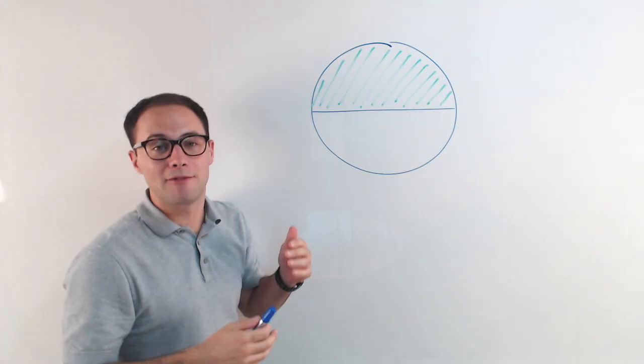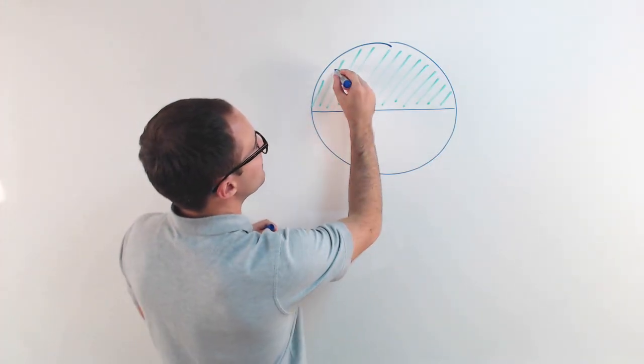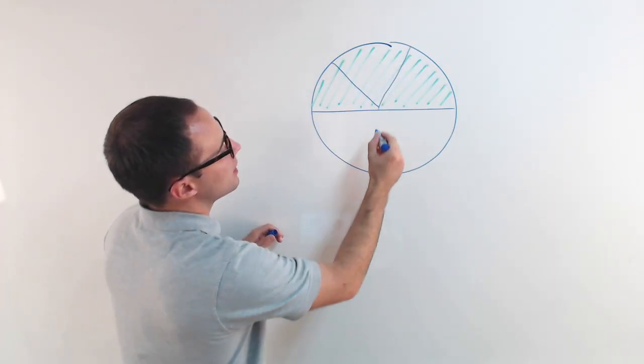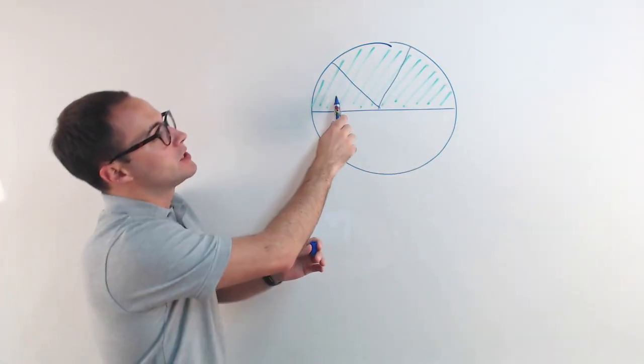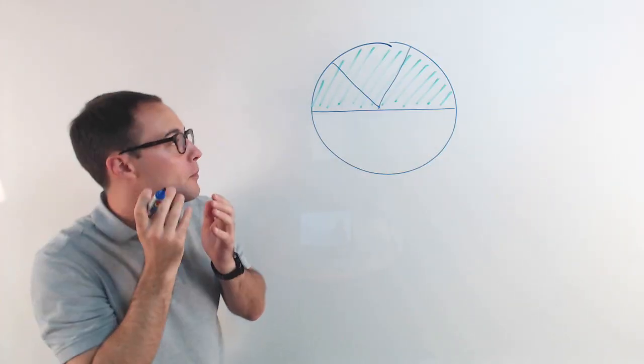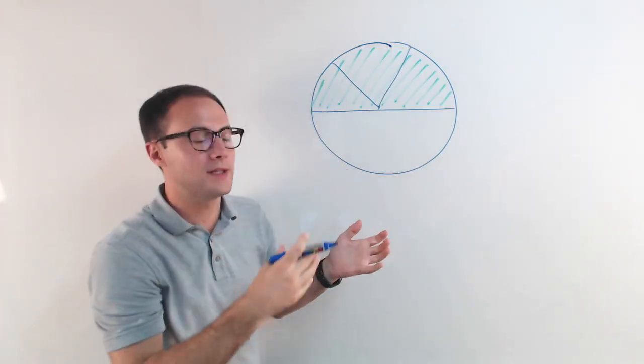So each of you have a third of that half. So what I'm going to do is I'm going to make it as even as possible. So each of you have a third of that. So the question is, well how much pizza did you actually eat? And it's relative to the whole pizza.